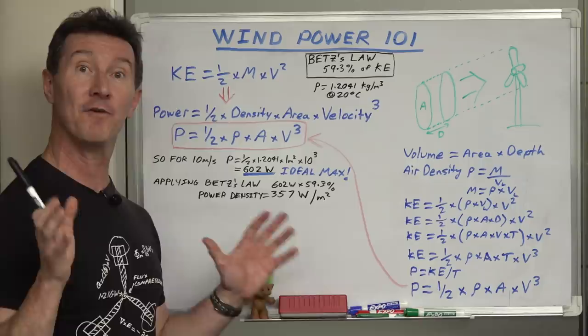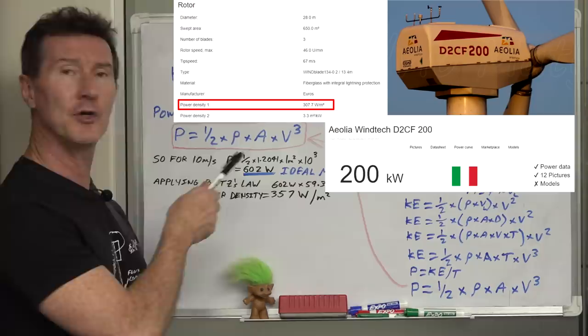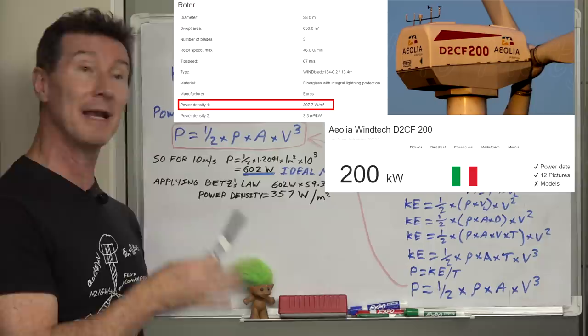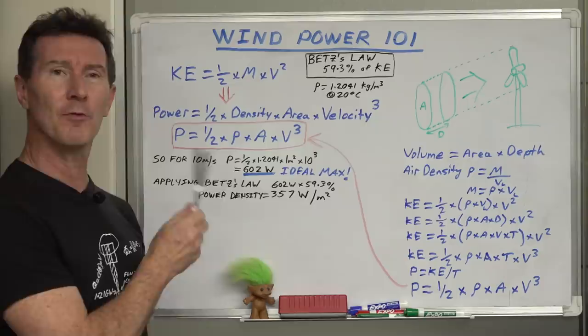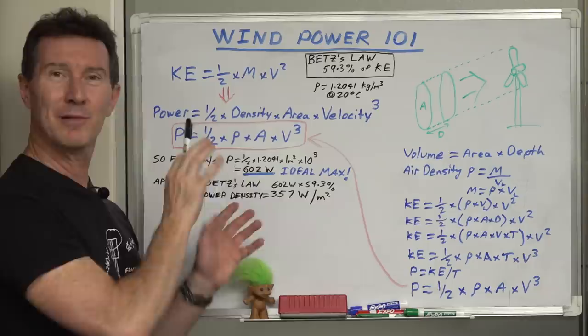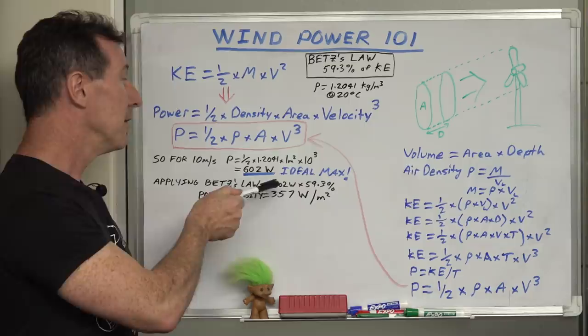By the way, Betz's law applies to open frame wind turbines like this, ones that don't have the frame around them. All the designs that have actually tried to put them in tunnels and things like that to try and get around Betz's law have all sort of come a gutzer in practice. Betz's law wins every time. So applying Betz's law to our maximum ideal figure times 59.3 percent gives us 357 watts per square meter and this is actually called the power density, which is an industry standard figure you'll find in the data sheet for wind turbines. Here's one of the data sheets for a huge 200 kilowatt wind turbine which shows it's just over 300 watts per square meter. Typically the best you'll get is like 80 to 85 percent of Betz's law because you've got the hub in there and you've got other losses to do with the blade design and things like that.